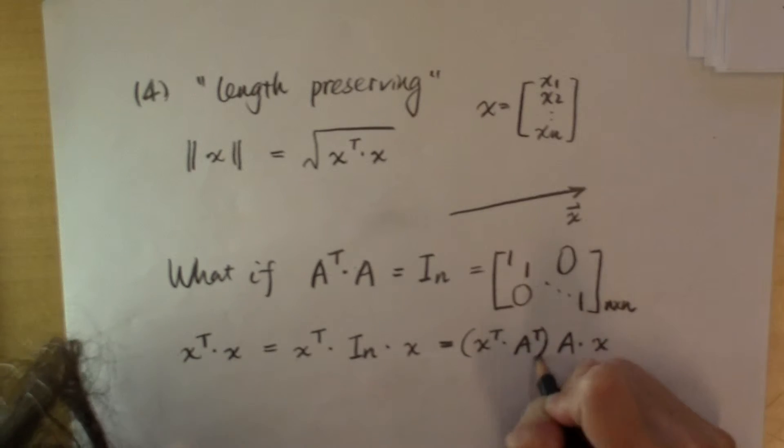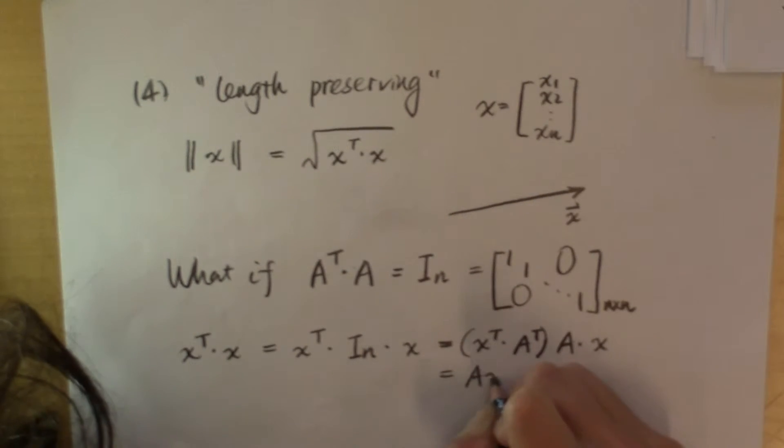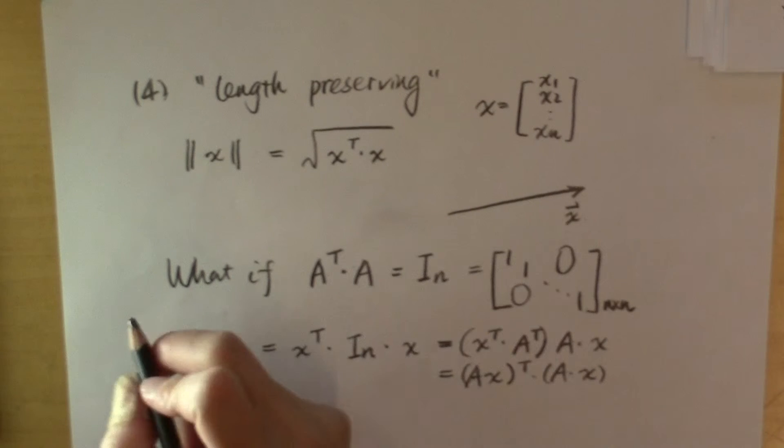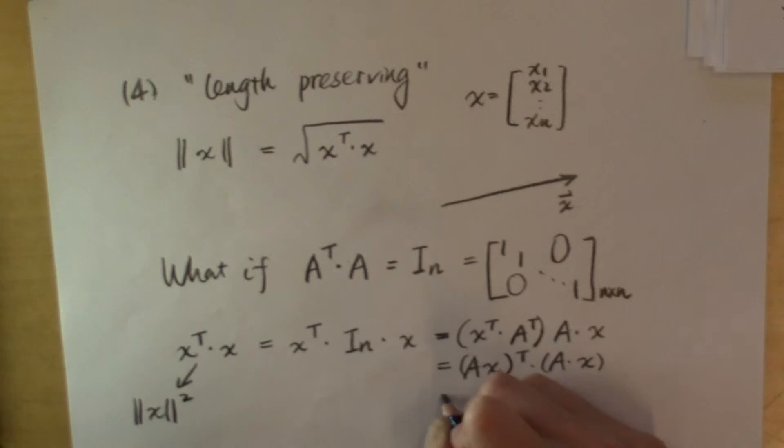So, with the associative law and that fact, we have this equal to A x transpose multiplied to A times x. What does this mean? This is the square of the Euclidean norm of x. This is the square of the norm of A times x.